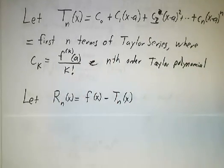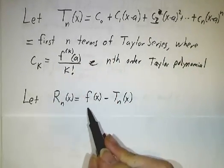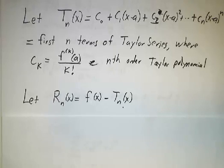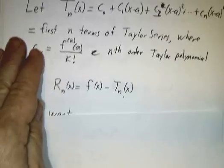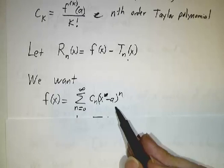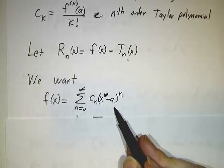And we're going to let Rn, the nth remainder, be what's left over when you subtract off the nth order Taylor polynomial from f. And what we'd like to have happen, we'd like to think that our function is given by an infinite series. But of course,